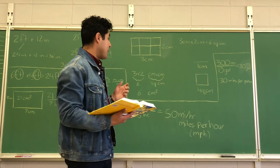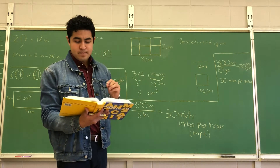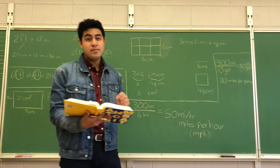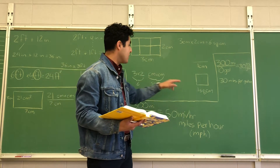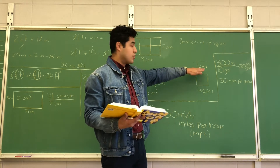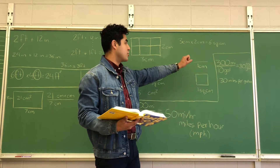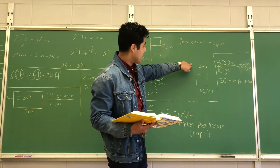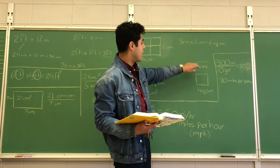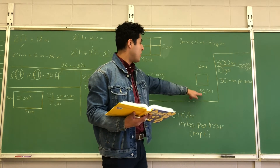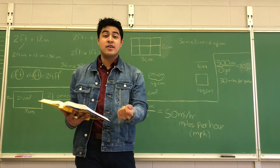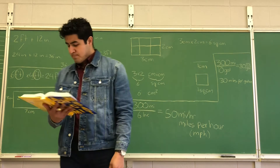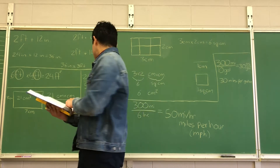Centimeters squared can be represented with the exponent 2, or the power of 2. It's important to realize that a centimeter and a square centimeter are two different measurements. A centimeter is a line segment used to measure a length. A square centimeter is a square used to measure area. That's why whenever you're answering area questions, make sure you write centimeters squared, not just centimeters.